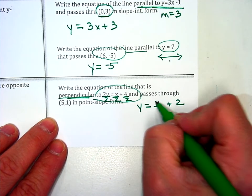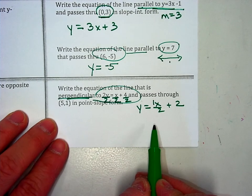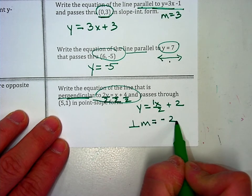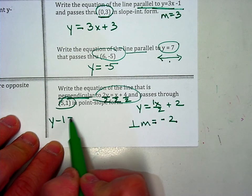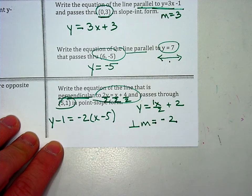Okay, there is a 1 in front of that x. The slope of this is 1 half, so your perpendicular slope is really negative 2. I'm going to use this point. y minus 1 equals negative 2 times (x minus 5). And the direction said point slope, so you are done.